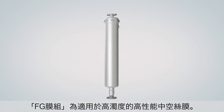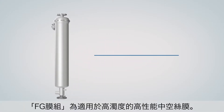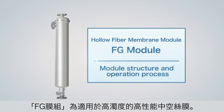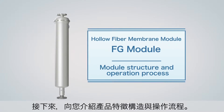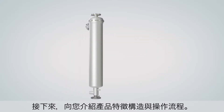The FG module is a high performance hollow fiber membrane module applicable for high turbidity water. Here we will outline the features of the module structure and the operation process.